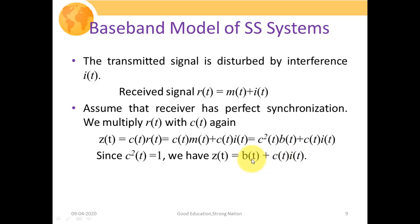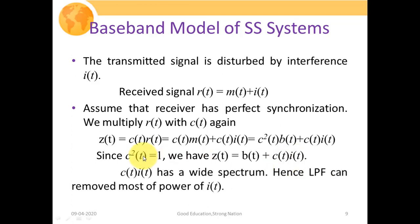Here B(t) is our original bit sequence, and C(t)·I(t) is a wideband noise term — because I(t) is an interference signal and C(t) has a wide spectrum, their product is also wideband. When passed through the low-pass filter, most of the interference power in C(t)·I(t) is removed, leaving only B(t).